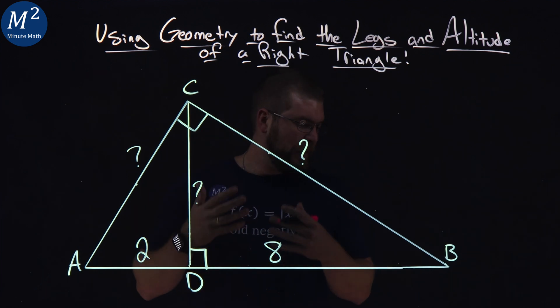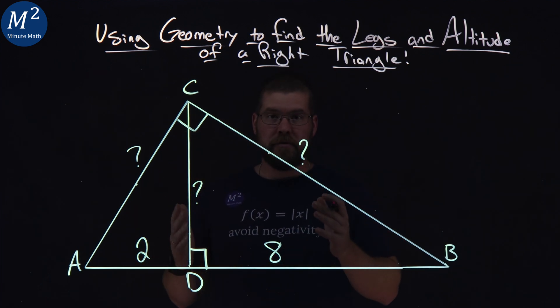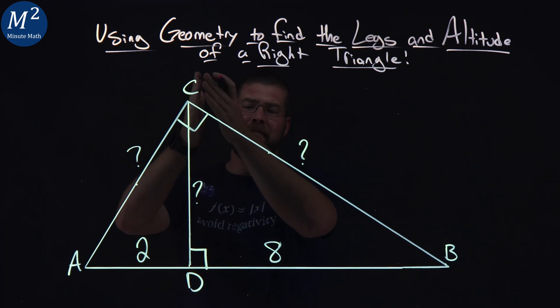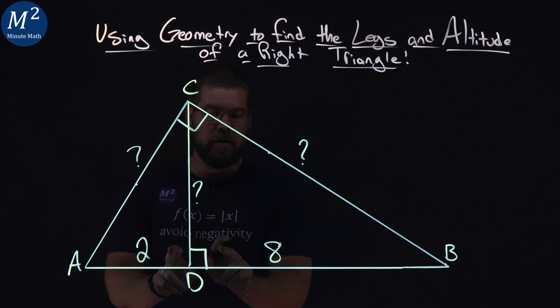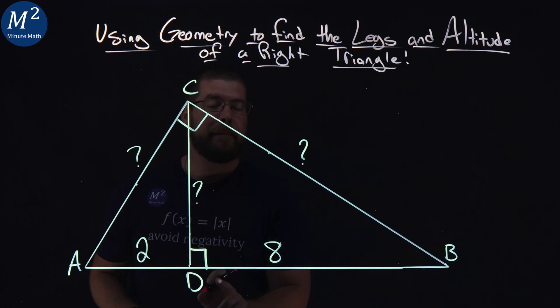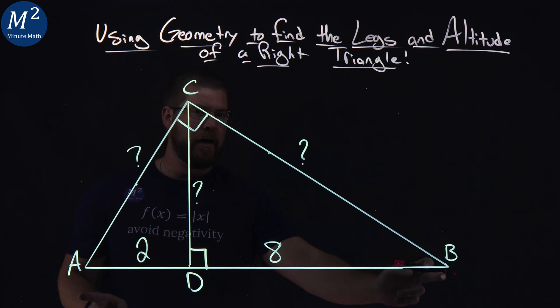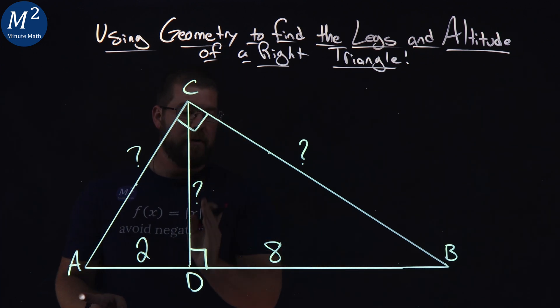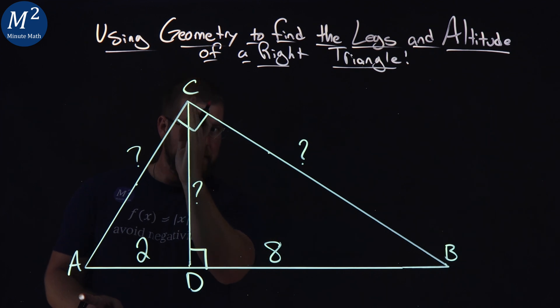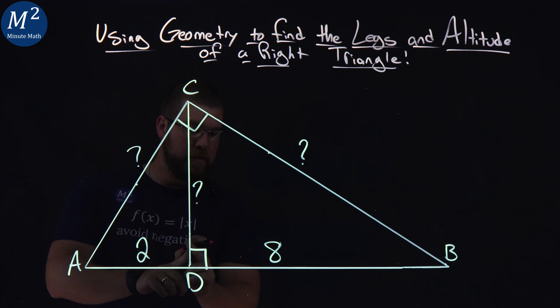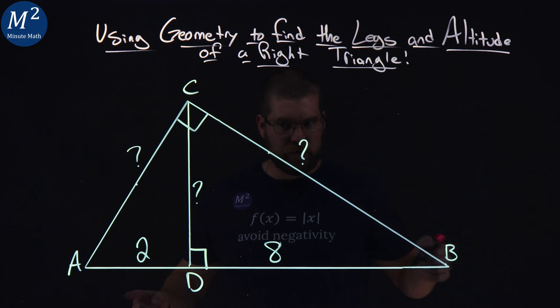So we want to solve this problem here. We're going to use what we know about the geometric mean theorem with altitudes. And what that really does is when we have an altitude, which we have here, right angle from the hypotenuse to the right angle, you can see how that goes. So the hypotenuse of the large triangle is opposite of the right angle.